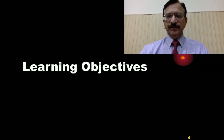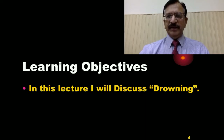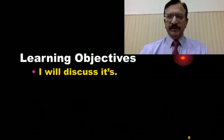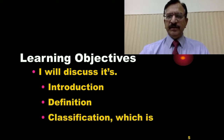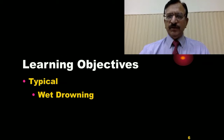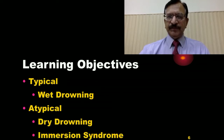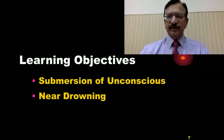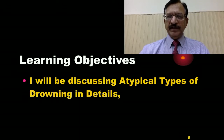In this lecture, the learning objectives will be that I will start my discussion on drowning. I will discuss its introduction, definition and classification — which includes typical drowning, also called wet drowning, and atypical drowning, which includes dry drowning, immersion syndrome, submersion of unconscious, and near drowning. These are the four types of atypical drowning, and I will be discussing them in detail one by one.